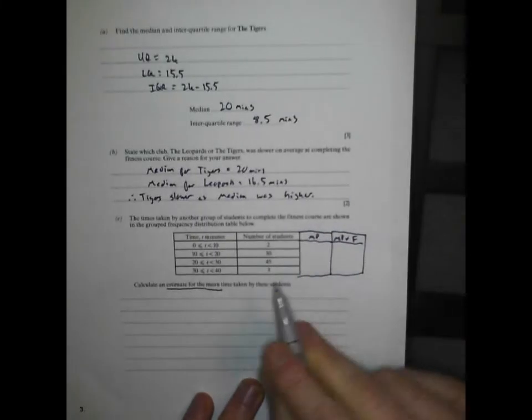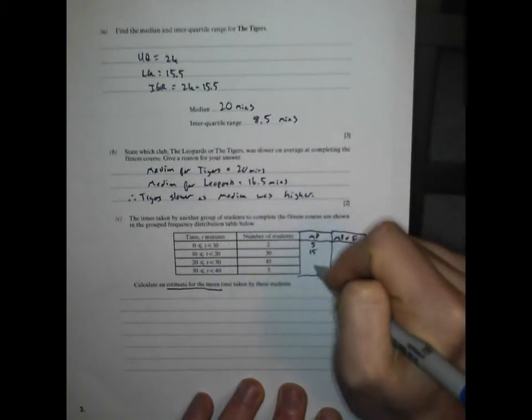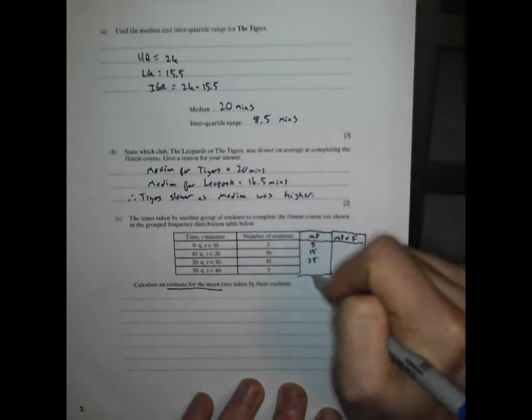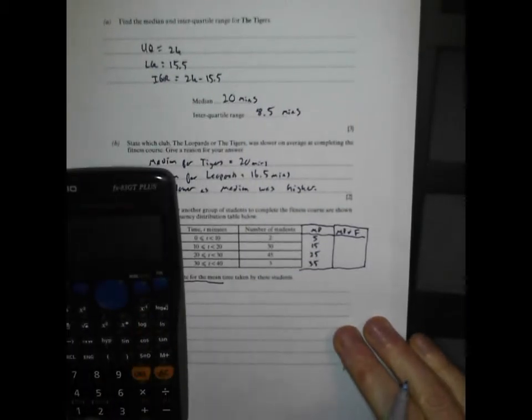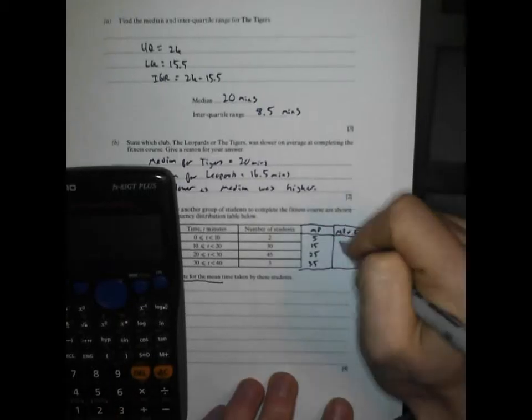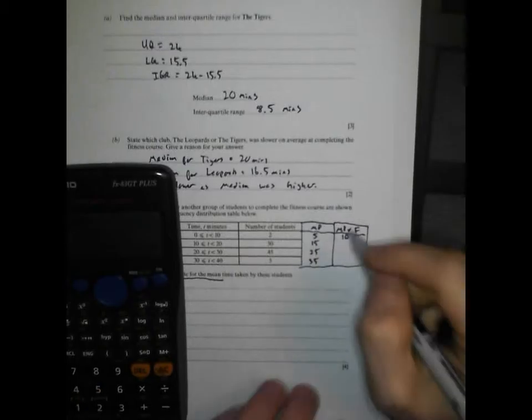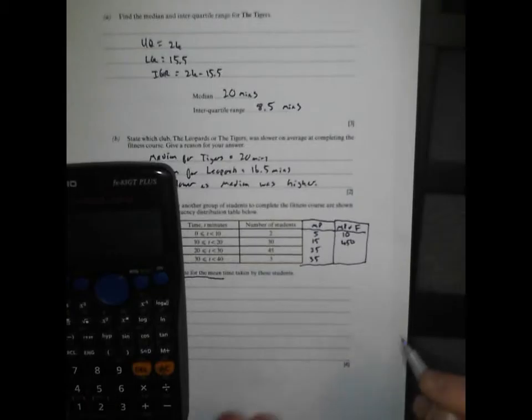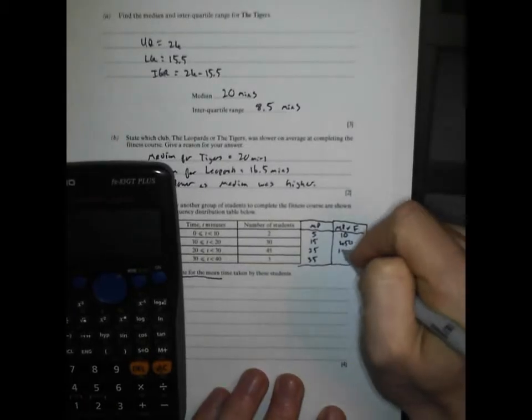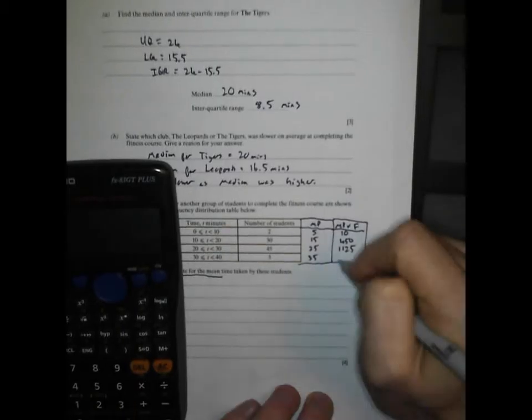Let's get our midpoint and midpoint times frequency. Between 0 and 10 is 5, 10 and 20 is 15, 20 and 30 is 25, 30 and 40 is 35. Let's get the calculator out. 5 times 2 is 10. 30 times 15 is 450. 45 times 25 is 1,125. And 35 times 3 is 105.